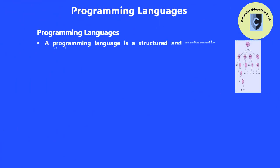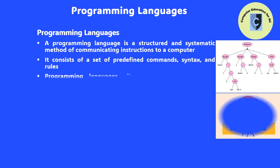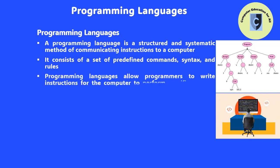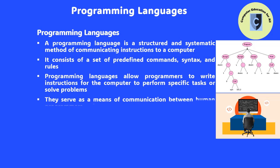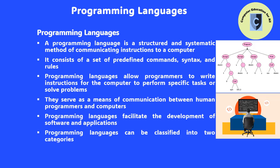A programming language is a structured and systematic method of communicating instructions to a computer. It consists of a set of predefined commands, syntax, and rules that allow programmers to write instructions, enabling the computer to perform specific tasks or solve problems. It serves as a means of communication between a human programmer and a computer, facilitating the development of software and applications. Programming languages can be classified into two categories: low-level languages and high-level languages.